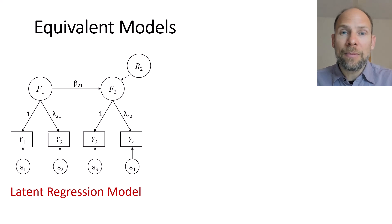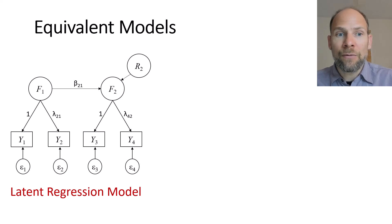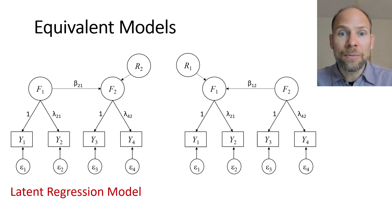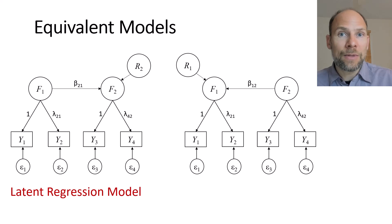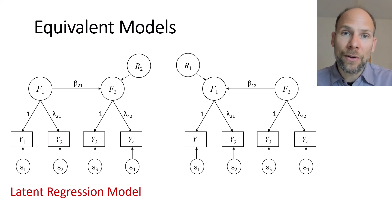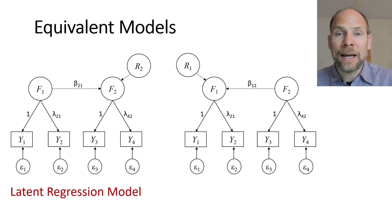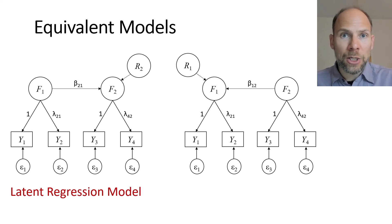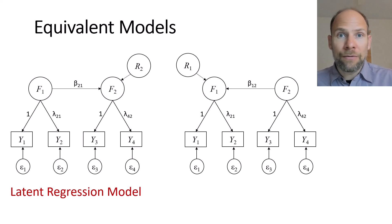If this model fits, you may say this proves that F1 causes F2. But if you give me your data, I can fit an alternative model that fits the data equally well — producing the exact same degrees of freedom, the same chi-square value, and the same p-value — even though in this alternative model, F2 causes F1. The causal direction is reversed, and yet this model fits equally well. So if one model fits, the other also fits.